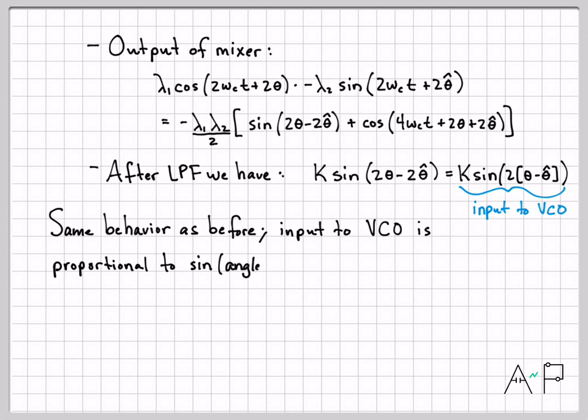So input is proportional to the sine of the angle difference, that's exactly what we want. So our VCO is going to be able to adjust its output theta hat as this difference changes. If it's above 0 it'll make an adjustment, if it's below 0 it'll make an adjustment, always to minimize this magnitude of the difference between theta and theta hat.